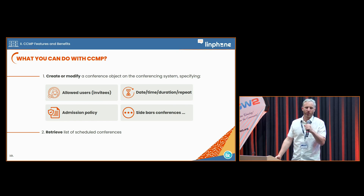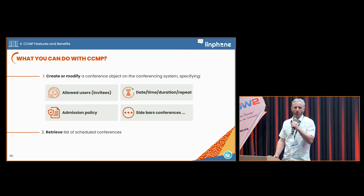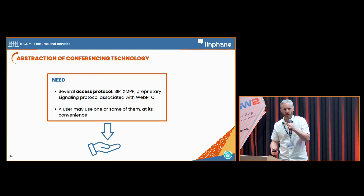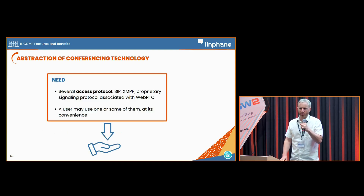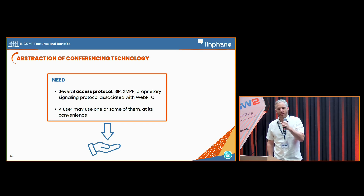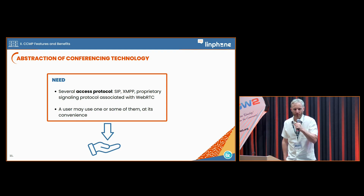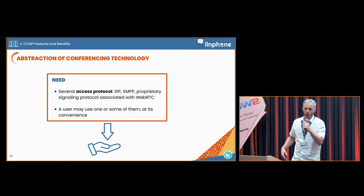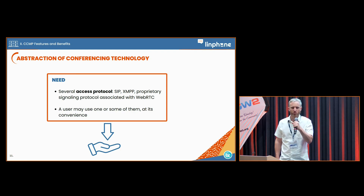You can also retrieve, as an organizer or as a user, the list of all scheduled conferences you are part of. The abstraction of conferencing technology is an essential feature of CCMP — there can be several access protocols for the conference, like SIP, which is the one we use in Linphone, but also XMPP.